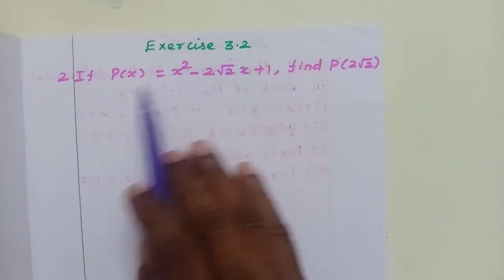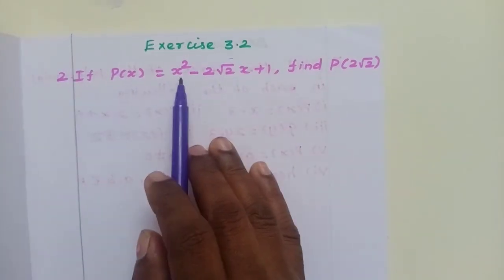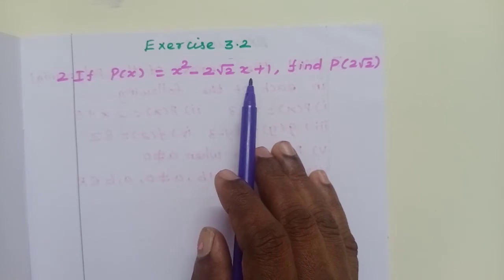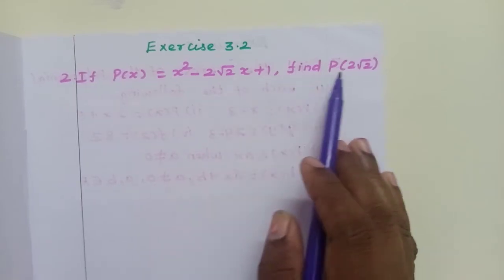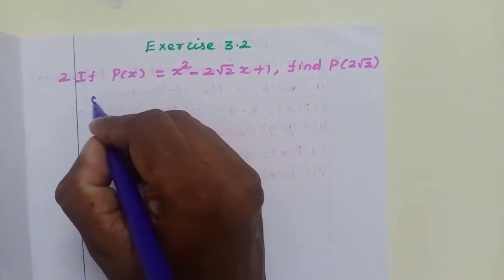Exercise 3.2, question number 2. If p of x equals x squared minus 2 root 2 x plus 1, find p of 2 root 2.